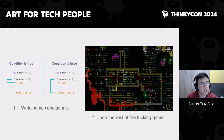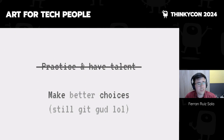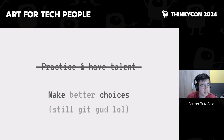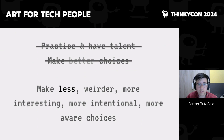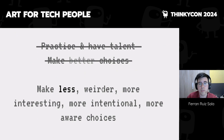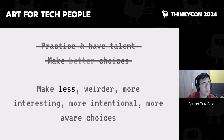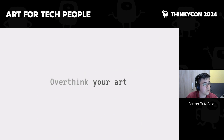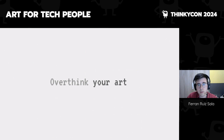The first step of reframing is: instead of talking about practicing and having talent, let's talk about making better choices. But that still sounds like 'get good.' So my next step is to suggest: let's commit to making fewer choices. If I make fewer choices, I can make each one more interesting, more intentional, and more aware. I don't want to rely on intuition, because as a programmer I probably don't have good visual artist intuition. So I suggest: overthink stuff.